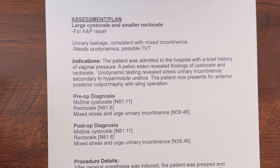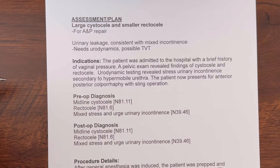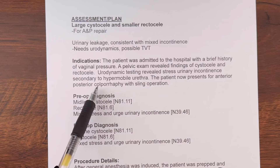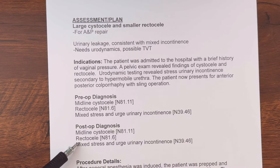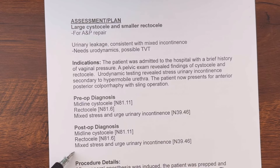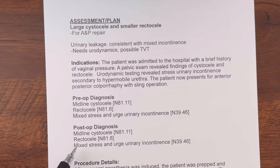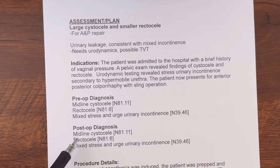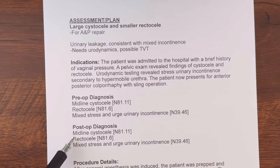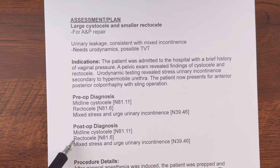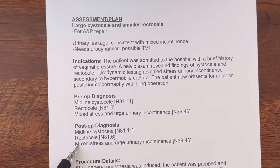So let's get into the indications. The patient was admitted to the hospital with a brief history of vaginal pressure. A pelvic exam revealed findings of cystocele and rectocele. Urodynamic testing revealed stress urinary incontinence secondary to a hypermobile urethra. The patient now presents for anterior posterior colporrhaphy with sling operation. Also, medical terminology is great because you will know that colporrhaphy means vaginal repair. So we have our pre-op and post-op diagnosis codes — they are the same here — and you'll want to always review your diagnosis codes to make sure they don't exclude each other. These do not.